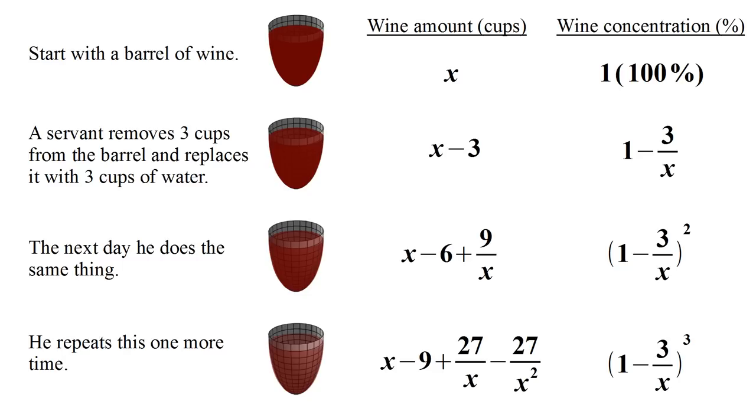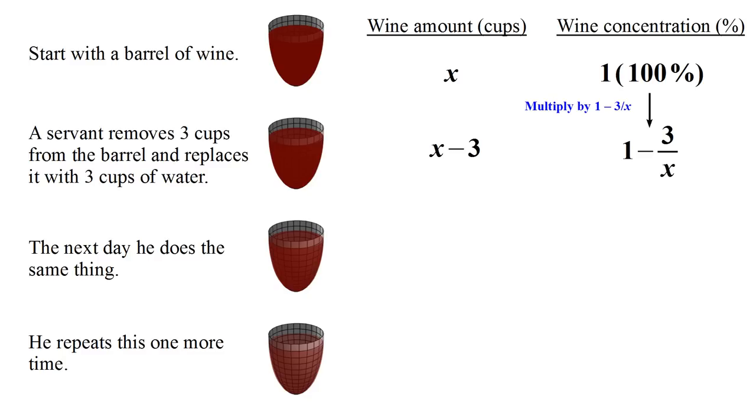So that's the final concentration of wine. Now we've gone through all this algebra, and I just want to point out there was a shortcut we could have used if we had realized it earlier. After we had gone through the first step of figuring out the concentration of wine, we could have noticed that the concentration going from 100% to the first step is found by multiplying by one minus three divided by X.